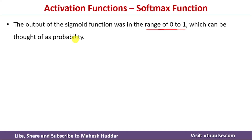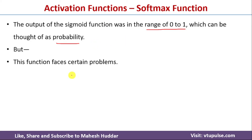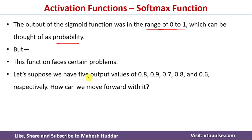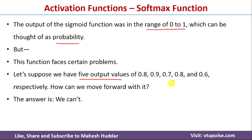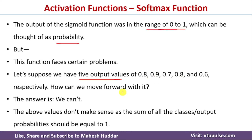Since sigmoid values are similar to probabilities, we can use the sigmoid activation function whenever we expect output values in the range of 0 to 1. However, sigmoid faces a problem: if we have five output values like 0.8, 0.9, 0.7, 0.8, and 0.6, adding all these probabilities gives a sum greater than 1, so we cannot use sigmoid for this kind of problem.